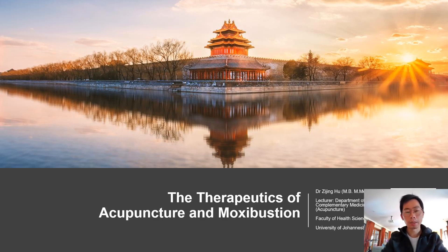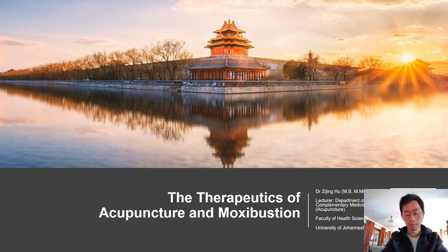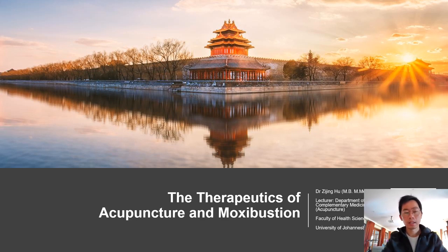The location below the navel and above the pubic bone is the lower abdomen. The lower abdomen belongs to the kidney, large intestine, small intestine, urinary bladder, and uterus. These are closely related to the foot shao yin, hand yang ming, foot and hand tai yang meridians, as well as the chong meridian, ren meridian, dai meridian, and other meridians. The side of the abdomen is related to the liver and gallbladder.